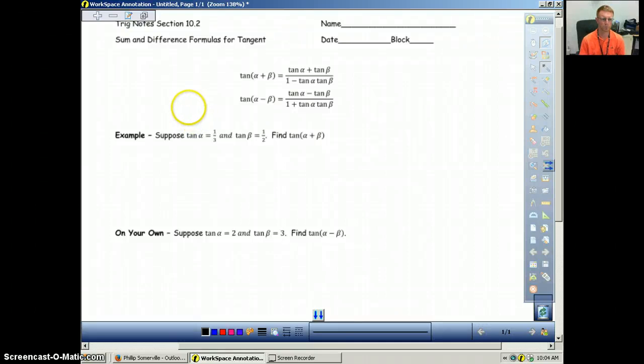This is section 10.2. We're going to be dealing with the sum and difference formula for tangent. In the last section we did the sum and difference formula for sine and cosine. This is really the same idea. We're just introducing two new formulas, the sum of the tangent and the difference of the tangent. So let's just get right into this. This will be a really quick video.